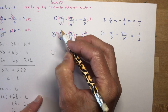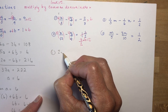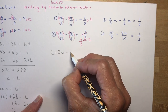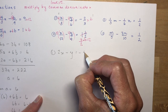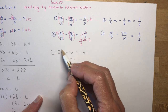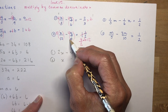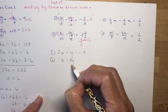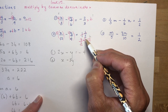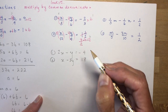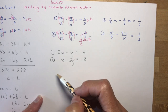Simplifying equation 1: 3 goes into 6 twice, giving 2x. The 6 over 6 is 1, giving minus y. 3 into 6 is 2, and 2 times minus 2 is minus 4, so the right side is minus 4. Simplifying equation 2: x divided by 12 gives just x, minus 3y, and (3/2) times 12 — the 2 goes into 12 six times and 6 times 3 is 18 — giving x minus 3y equals 18.